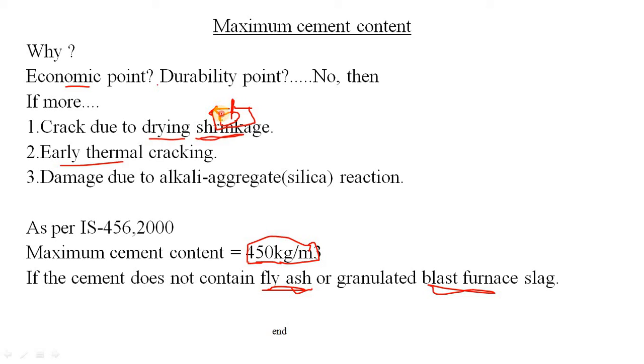And third reason is your damage due to alkali-aggregate reaction. If you increase the cement quantity, then the aggregate component which is silicon dioxide - SiO₂ or the aggregate component - tries to combine with the cement's alkali component. That means your aggregate is actually deteriorating. That's why you need to limit the maximum cement content in your concrete.